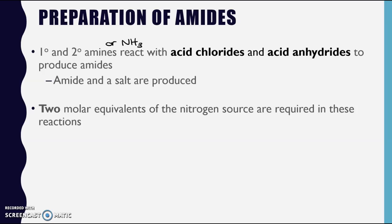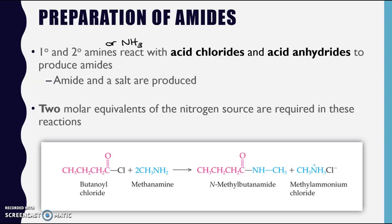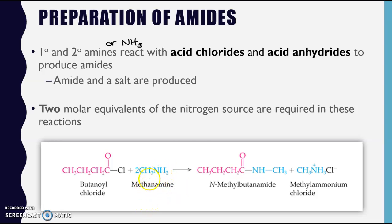Let's look at why two molar equivalents are needed by focusing on a specific example. Here my carbonyl group is provided by an acid chloride - it looks like a carboxylic acid with the hydroxyl group replaced by chlorine. I'm going to react it with methanamine: one carbon, so that's 'meth,' and it's an amine - so let's take a look at how this happens.